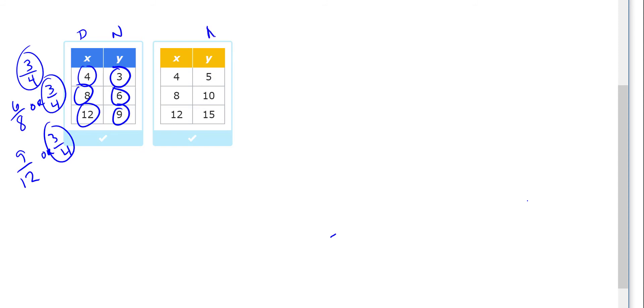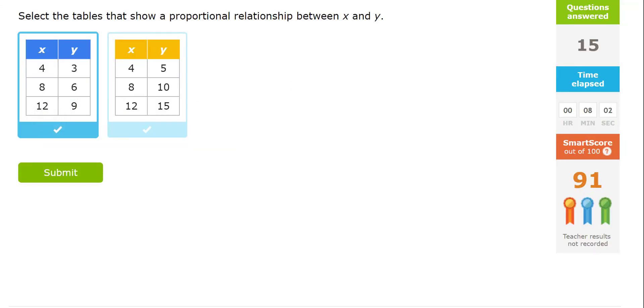The other one, our numerator is the y, our denominator is the x. So this is going to make five-fourths. This is going to make ten-eighths. And this is going to make fifteen-twelfths. And if I reduce this down, five-fourths is going to stay five-fourths. I know two can go into ten five times and eight four times. So that one works. And I know three can go into fifteen five times and three can go into twelve four times. So that one works. Both of these are going to get checked off definitely as proportional.